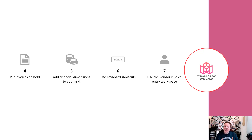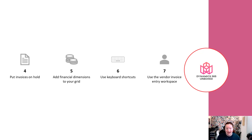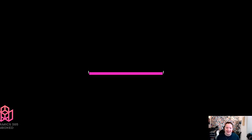Because I like to keep my videos short and easy to consume, I've run out of time for today. But as a sneak peek for next week, I have four more tips for accounts payable clerks: how to put invoices on hold, how to add financial dimensions to your grid, keyboard shortcuts critical for the AP clerk, and more details on how to use and customize the vendor invoice entry workspace. Be sure to subscribe, like, and comment — and if there are more tips you want to see or share, comment below. We'll see you next time on Dynamics 365 Unboxed.